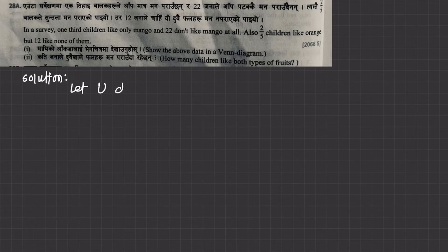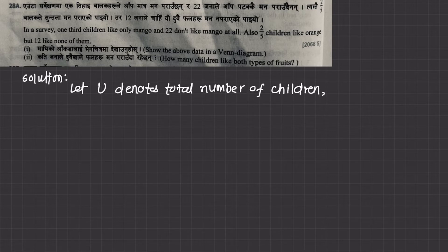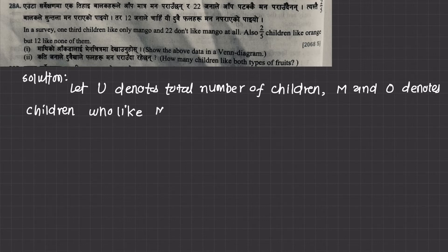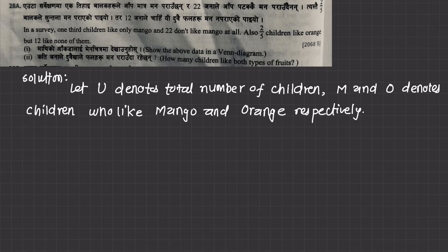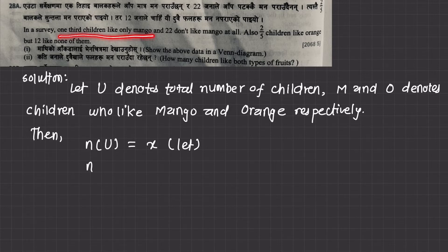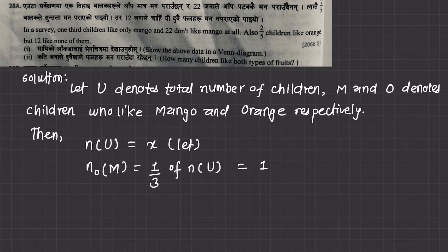Let's start the solution. Let U denote the total number of children. M and O denote the number of children who like mango and orange respectively. The number of U is equal to X. One third like only mango, so only mango equals one third of U, which is X by 3.